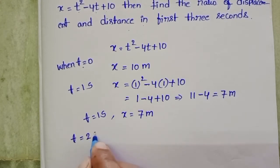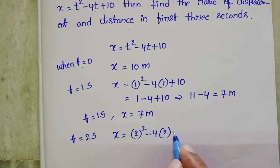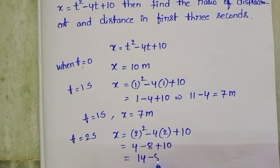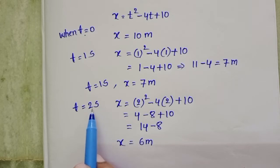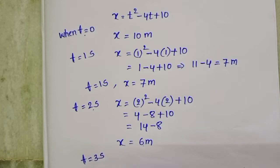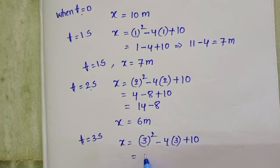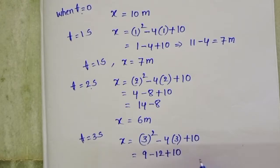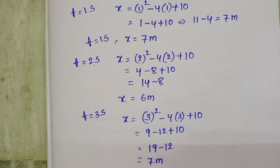When time equals 2 seconds, position is 2 squared minus 4 times 2 plus 10, giving 4 minus 8 plus 10 equals 6 meters. When time equals 3 seconds, position is 9 minus 12 plus 10 equals 7 meters.